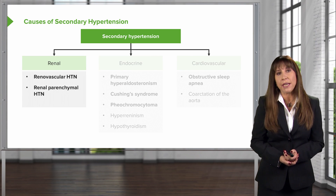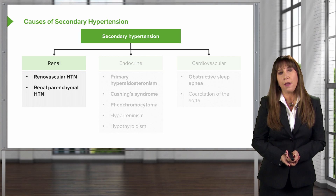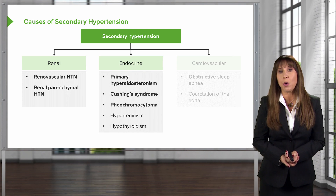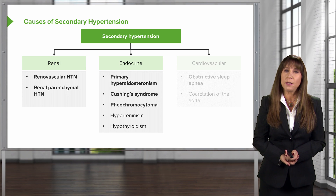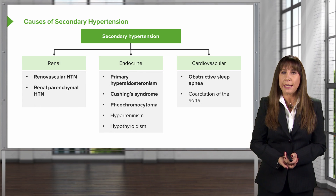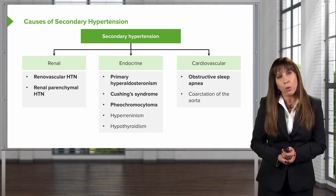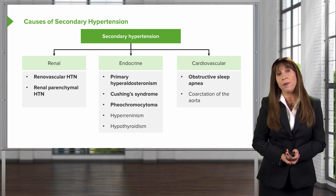The causes of secondary hypertension are easiest to group into categories. Renal causes include renal vascular hypertension and renal parenchymal hypertension. Endocrine causes include primary hyperaldosteronism, Cushing syndrome or Cushing's disease, pheochromocytoma, hyperreninism, and hypothyroidism. Cardiovascular causes include sleep disordered breathing with obstructive sleep apnea and coarctation of the aorta. A few of these topics are bolded because we're going to go through those today — these are what you'll encounter most often clinically and what you'll be responsible for on your boards.